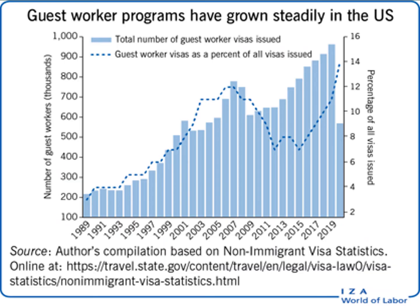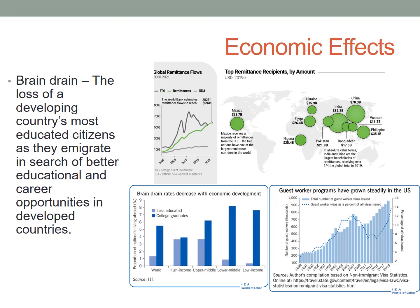When large numbers of guest workers come into a country, as they have increasingly done for the United States, it can lead to greater production and an overall increase in the economic development for the country that hosts them. But it may also mean greater demand for goods and resources, leading to increasing prices. Migrants also increase the available labor pool, but because they will often work for lower wages, that may reduce the number of jobs available to native-born citizens.